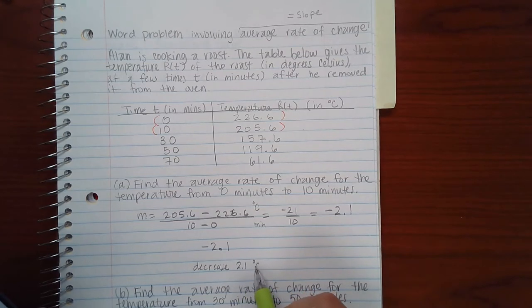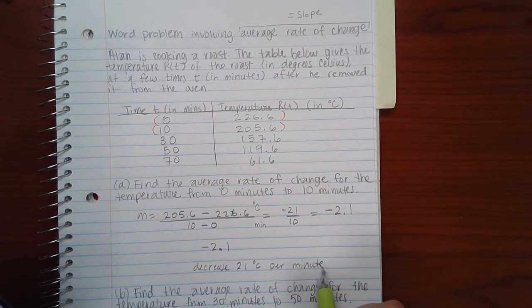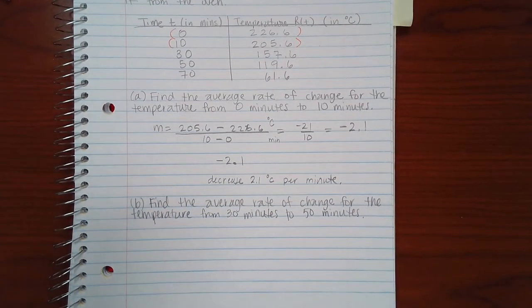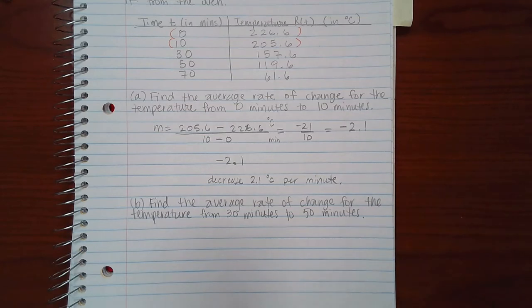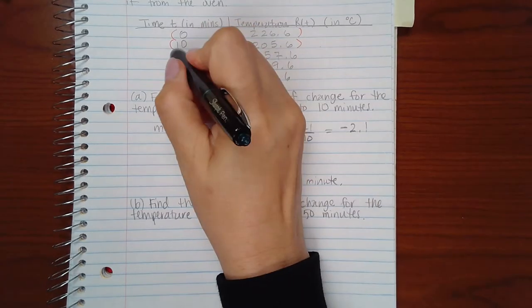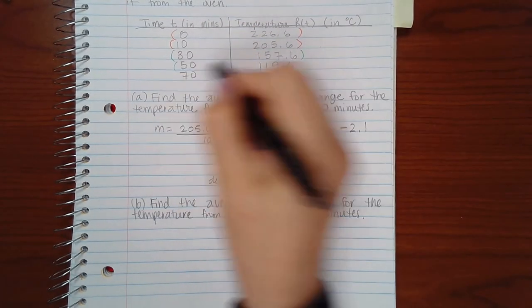Now part B says find the average rate of change, find the slope, for the temperatures from 30 minutes to 50 minutes. So this means this time we're looking at this point and this point, but I'm going to follow the same formula.